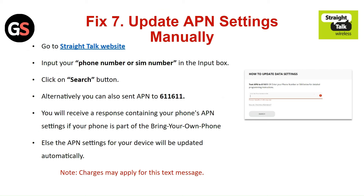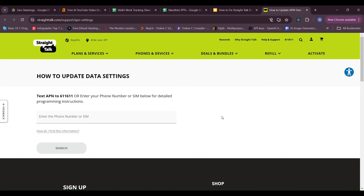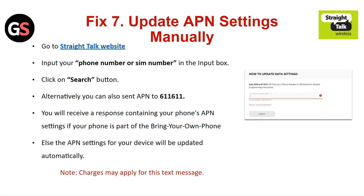Fix 7: Update the APN settings manually. Go to the Straight Talk website and input your phone number or SIM number in the input box. Click on the Search button. Alternatively, you can also send APN to 611611. This will return a response containing your phone's APN settings if your phone is a bring-your-own phone, as the APN settings for your device will be updated automatically. No charges may be applied for this text message.